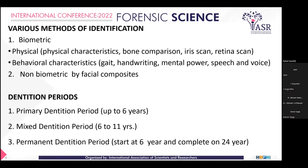Various methods of identification other than teeth include biometric and physical characteristics such as bone comparison, iris scan, and adenus scan. Behavioral characteristics include gait, handwriting, mental power, speech, and voice. Non-biometric methods include bifacial composites or facial reconstruction, as seen in earlier presentations.